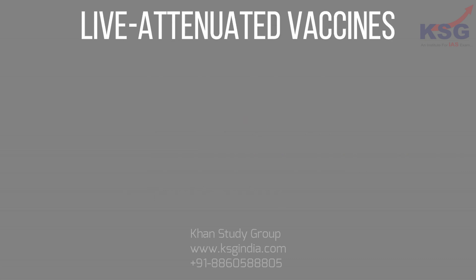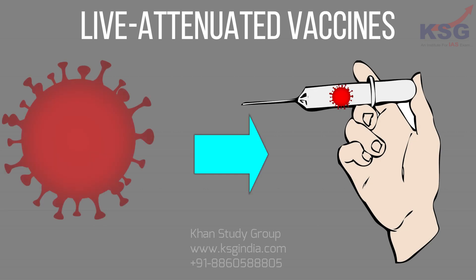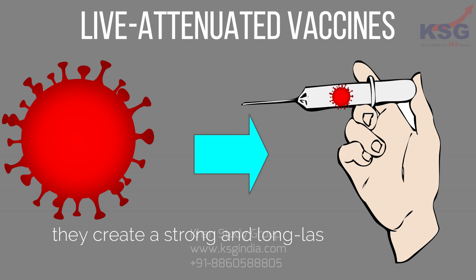Live attenuated vaccines use a weakened form of the germ that causes a disease. Because these vaccines are so similar to the natural infection that they help prevent, they create a strong and long-lasting immune response.